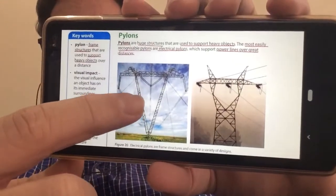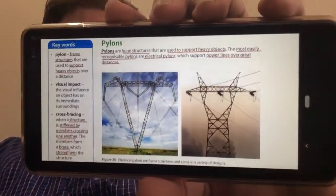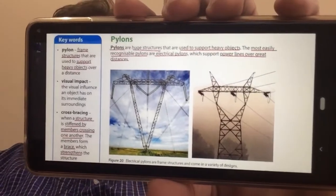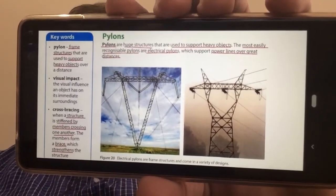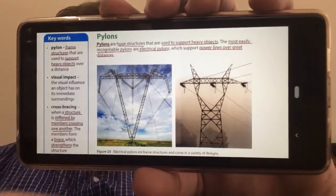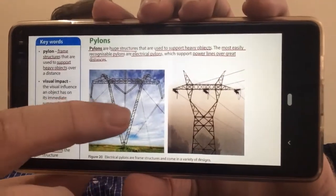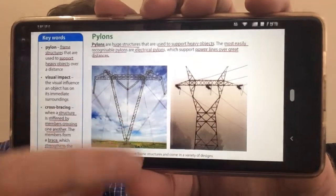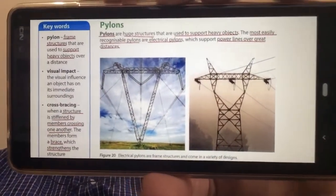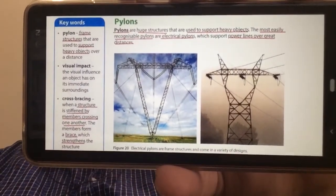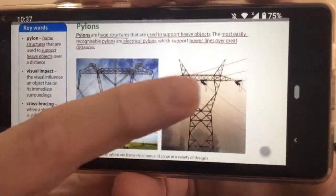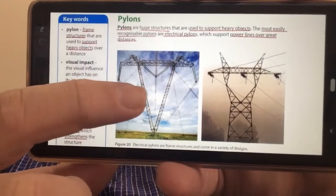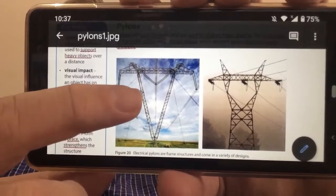So there's our pylon structures there. You can see them nicely. Those are electric pylons, the specific ones. Pylons are frame structures that are used to support heavy objects over long distances. So you can imagine these long heavy electrical cables are supported every now and again by these giant pylons. And the pylons have lots of various structures within them to help keep them nice and strong and sturdy.